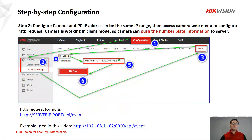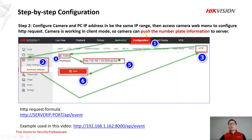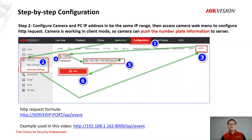In step two, we configure the camera and the PC IP address in the same IP range, then access the camera webpage or web menu to configure HTTP requests. The camera is actually working in client mode, which means the camera pushes number plate information to the server. The server doesn't need to do anything but stand by and receive the information. Here you can see the formula for the HTTP request, which is very simple, and the example shown here is a sample from the test where I made this video.